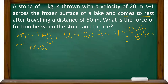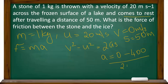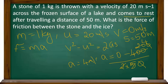The third formula is v squared minus u squared equals 2as, so a equals v squared minus u squared divided by 2s. Since v squared equals 0, and u squared equals 20 squared which is 400, we get a equals minus 400 divided by 2 into 50, which is minus 400 divided by 100. So the magnitude of acceleration is 4 meters per second squared.